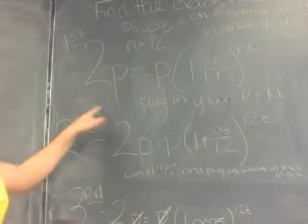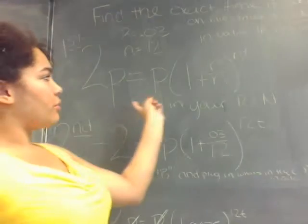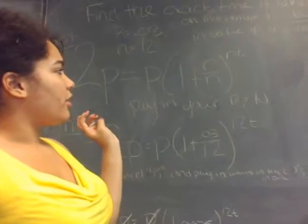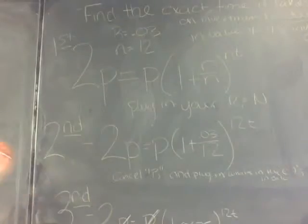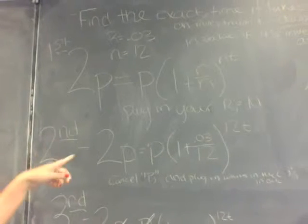So your equation is 2P equals P times the quantity 1 plus R over N to the exponent NT. And then you're going to plug in your R and your N.